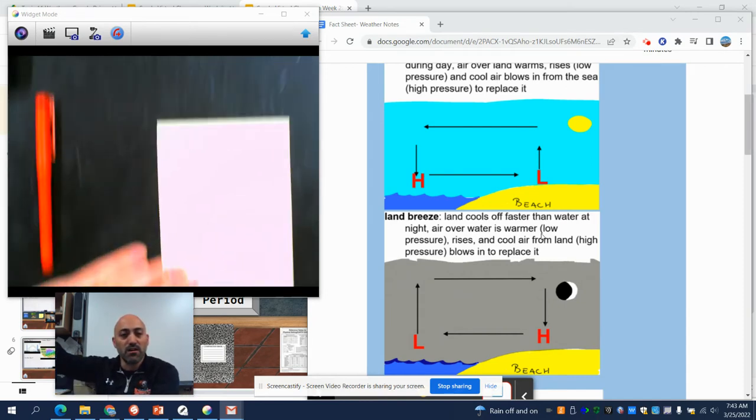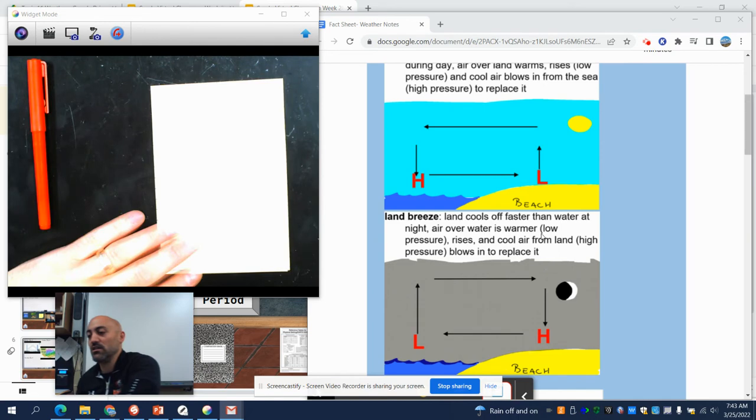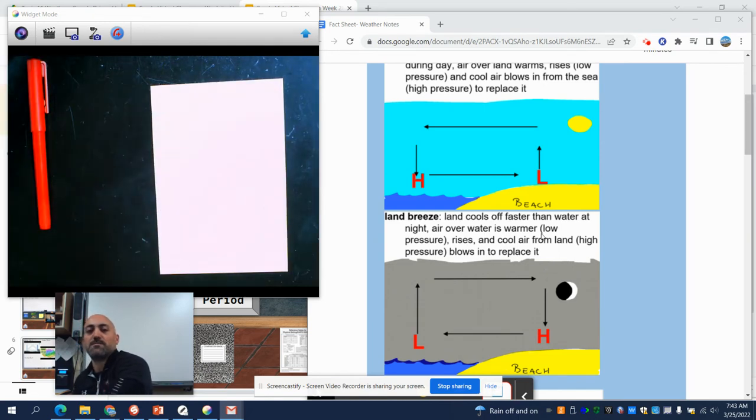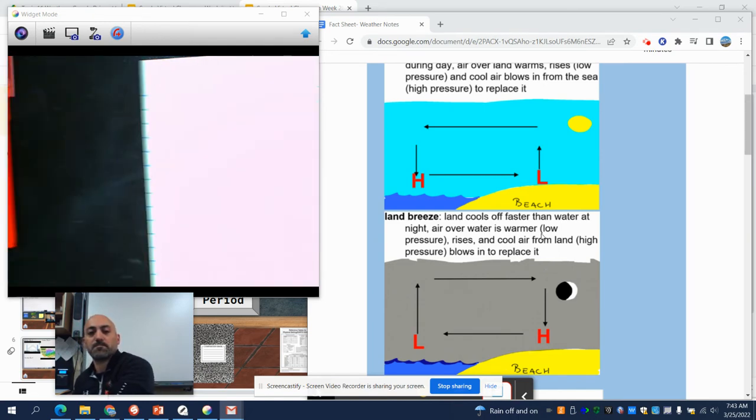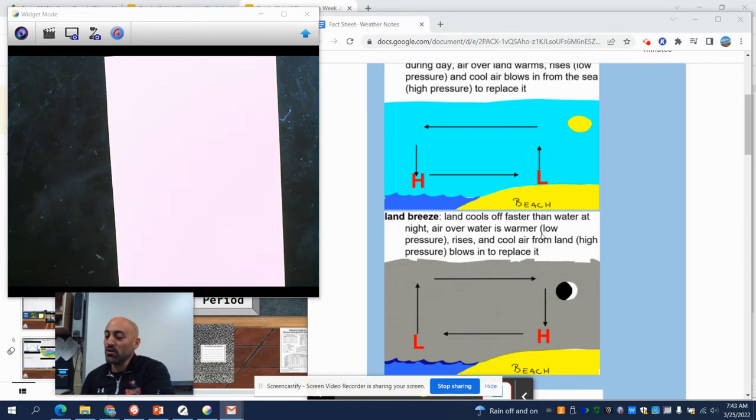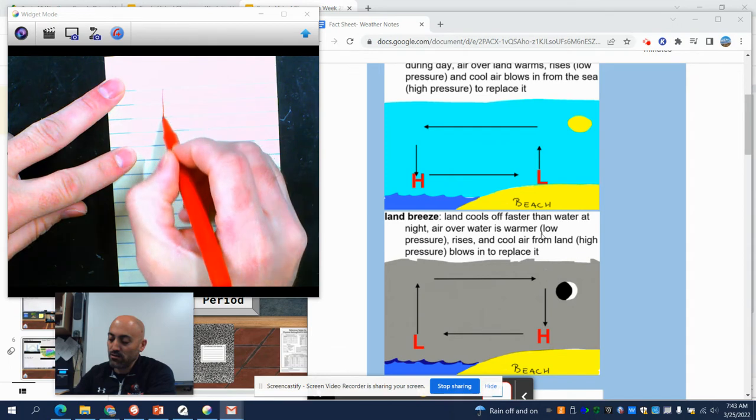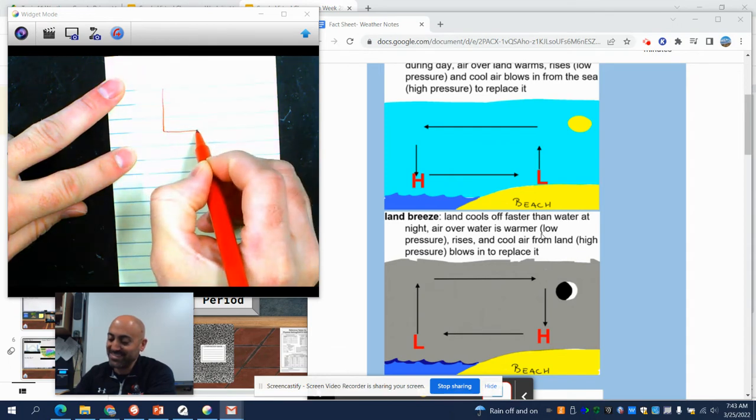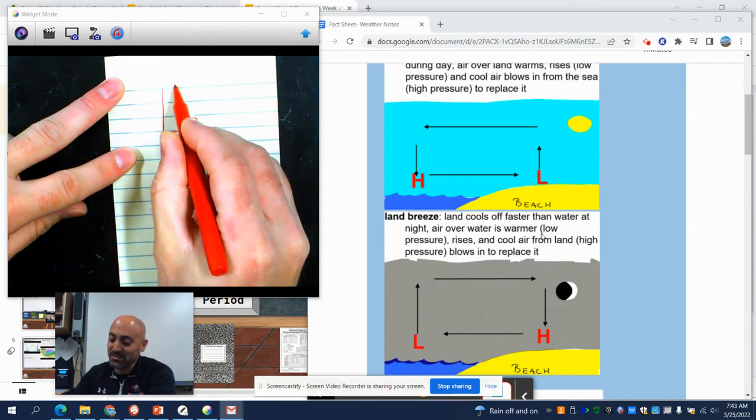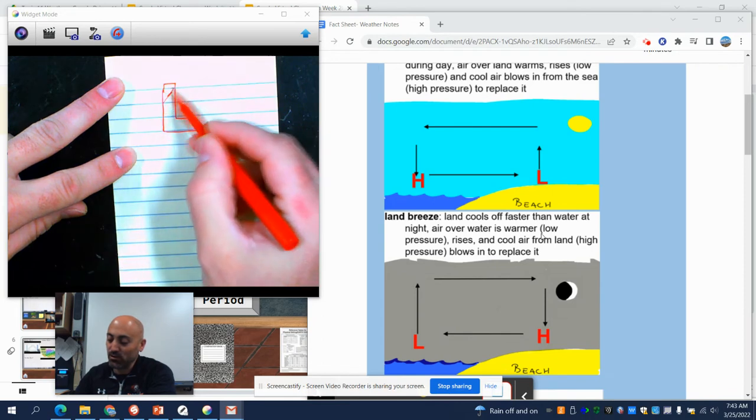So if we take our sheet here and we zoom in just a tiny bit. The two pressures that you have to draw - low pressure is drawn with red because it's hot air. So this is a low pressure system.